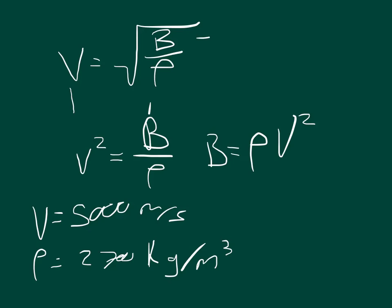We actually want it in kilograms, so it's perfect. We've just got to take 2,700 times 5,000 squared. So that will equal B. And so the answer to that is B equals 6.75 times 10 to the 10th.